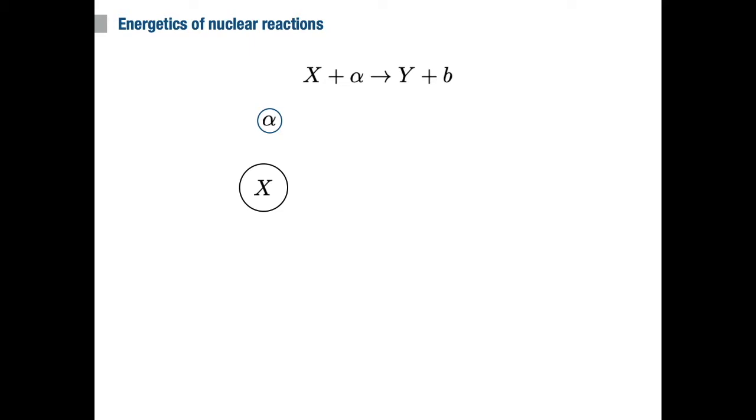First, we have nuclei X and α that come together and combine to form a compound-excited system. This compound-excited nucleus, either after some finite amount of time or instantaneously, decays to a nucleus Y by emitting a particle b.